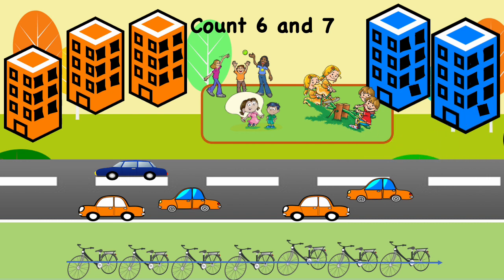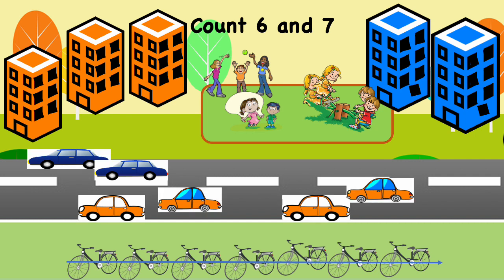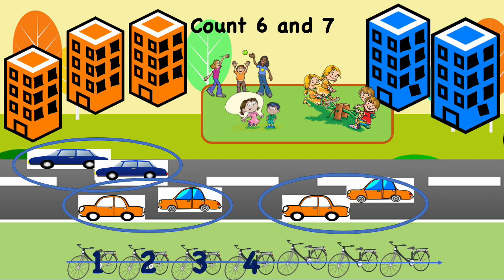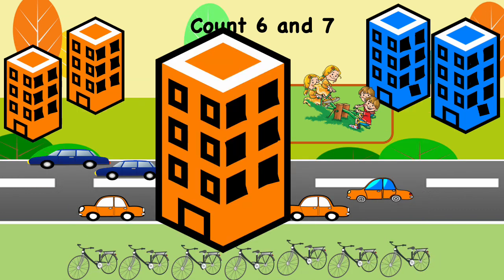Let's count the cars: 1, 2, 3, 4, 5, 6 — 6 cars, or we can say 3 pairs of cars. Let's count the bicycles: 1, 2, 3, 4, 5, 6, 7 — 7 bicycles, or we can say 3 pairs and 1 more. Let's count the windows — how many pairs of windows do you see on this building?